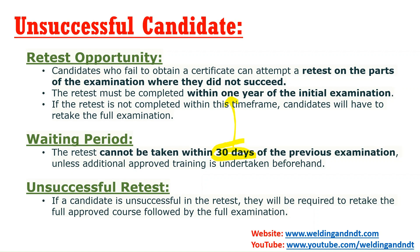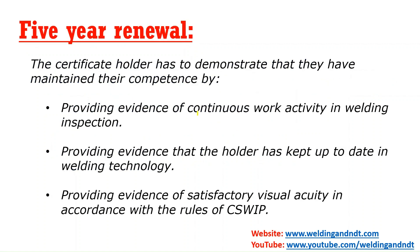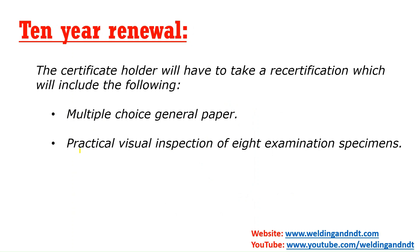If somebody fails the retest also, they have to take the entire examination again. For the period of validity: after five years your certificate will expire and you have to provide proof of experience for renewal. Then in the tenth year you will have to write a recertification exam. For five-year renewal you provide evidence of continuous work activity, show you are up to date with welding technology, and confirm your visual acuity is okay. In the tenth year there is an examination.